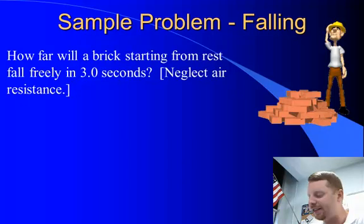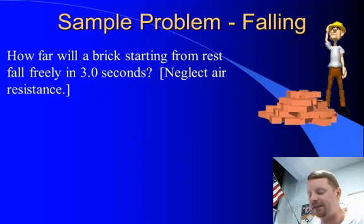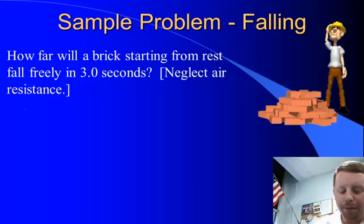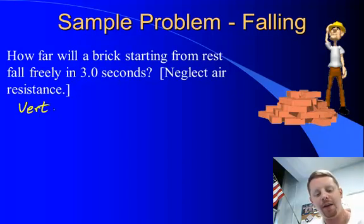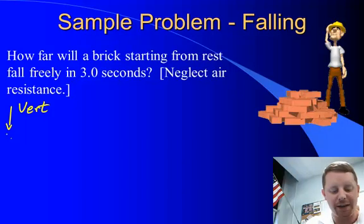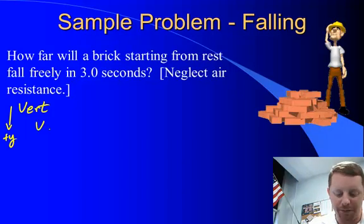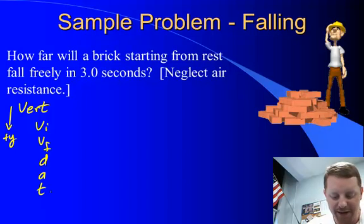Let's take a look at a sample problem: how far will a brick starting from rest fall freely in 3.0 seconds, neglecting air resistance? This is a vertical motion problem. We're going to call down the positive direction, and then we can make our vertical motion table: vi, vf, d, a, and t.